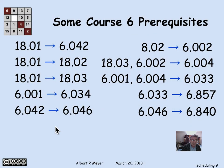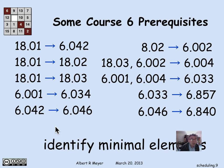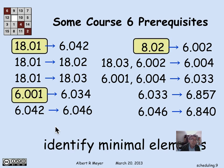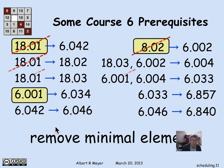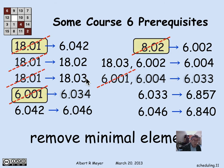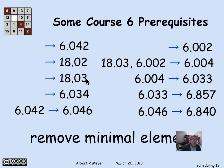Let's look at the prerequisites again and discuss how to build a schedule. The first step is to identify the minimal elements — the three we mentioned. We'll take those in the first term, using a greedy strategy: take as many subjects as we possibly can each term given the constraints. We can take all three freshman subjects in the first term since they have no prerequisites. Then we remove them — and all their occurrences as prerequisites for other subjects — giving us a simplified diagram with the minimal elements deleted.